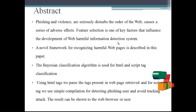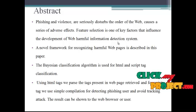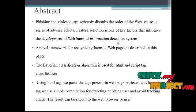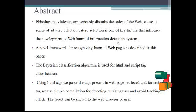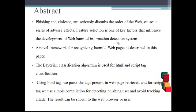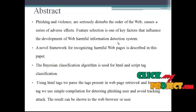The Bayesian classification algorithm is used for HTML and script tag analysis. We are going to divide the HTML pages into two types of tags: one is the HTML tags and another one is the script tags. These are the two tags present basically in HTML pages. Based on this, we perform classification on both HTML tags and script tags to find whether the webpage is a phishing page or not.